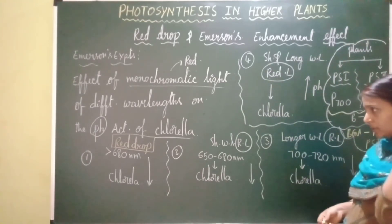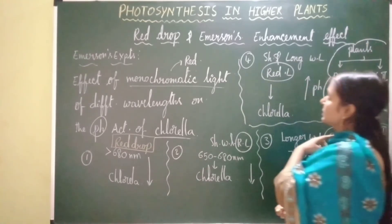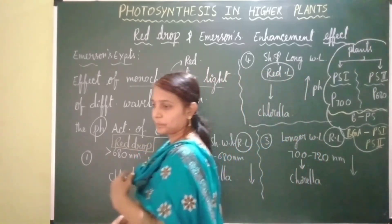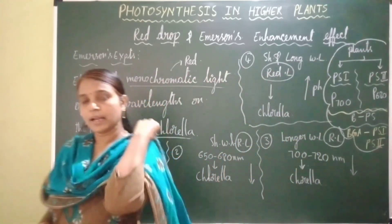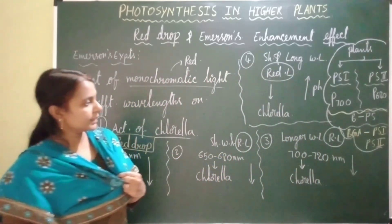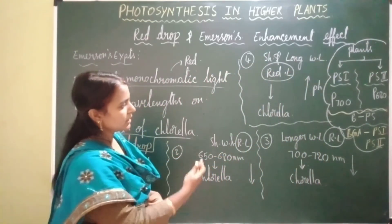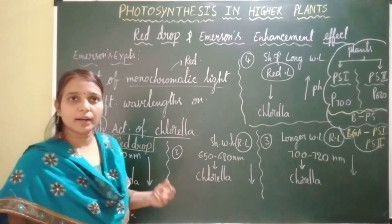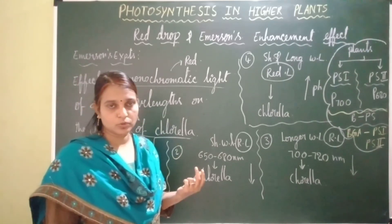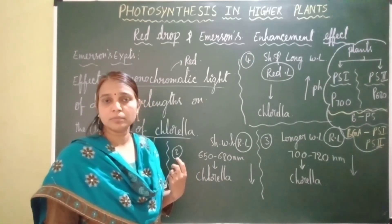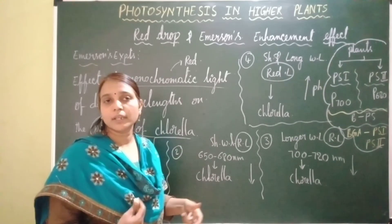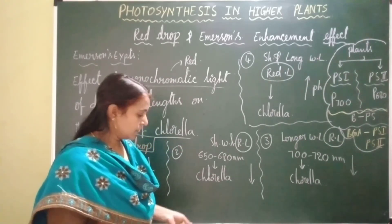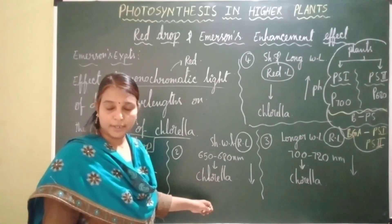This is all about red drop and Emerson's enhancement effect. In the next video I will be explaining the details of photosystem one and photosystem two — what are the components and how they are involved in functioning. Thank you students.